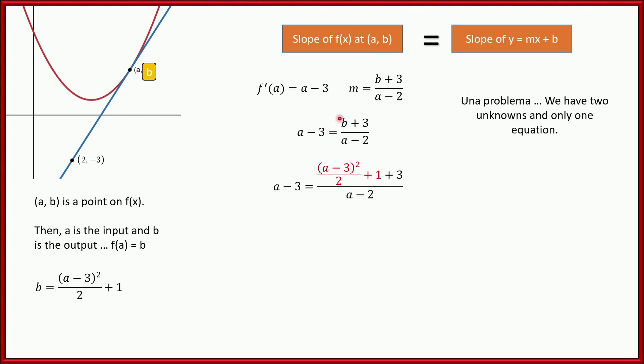So b is equal to (a-3)²/2 + 1. So let's take that b and replace it right here in red. Right? (a-3)²/2 + 1. So let's see if we can clean this up and simplify it. We're going to have to solve this equation. If we just take our time, it's not going to be too bad. But from here on out, there's no more calculus. This is all just algebra, right? Not that that makes it easy, but let's go ahead and do that.